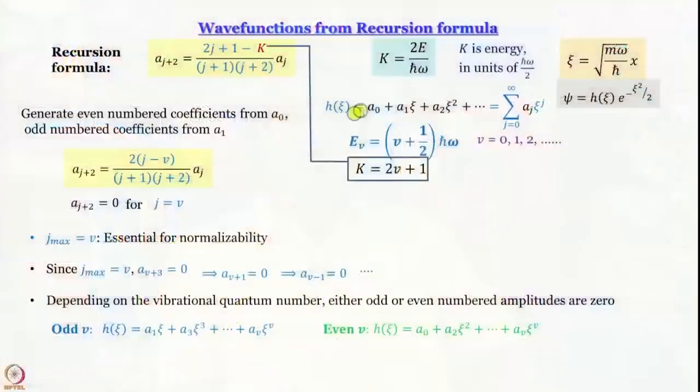This is where we have stopped in the last module. Just to do a quick recap, what we are doing is we are proposing the solution where psi is simply root of m omega by h cross multiplied by x. The wave function is H, which is a function of psi, multiplied by e to the power minus psi square by 2.